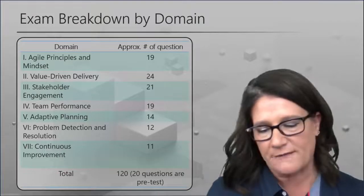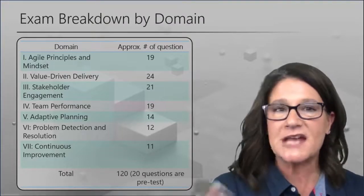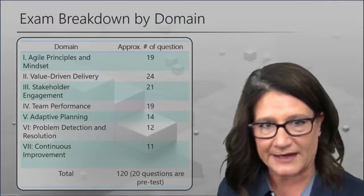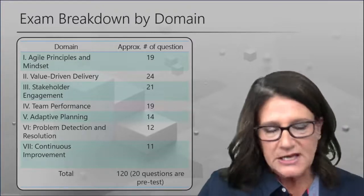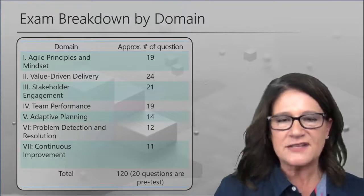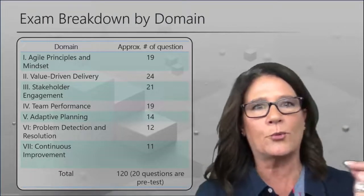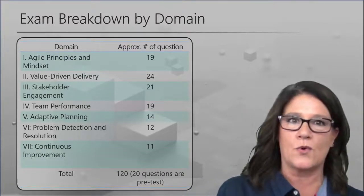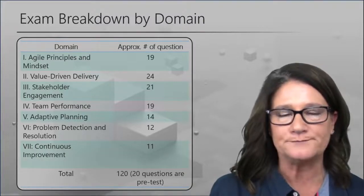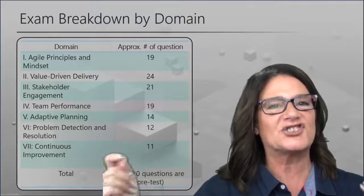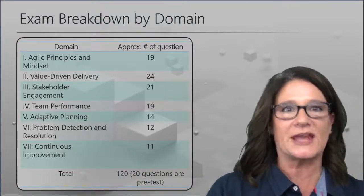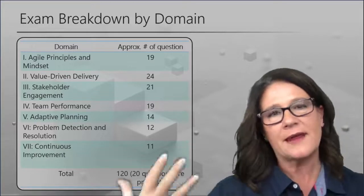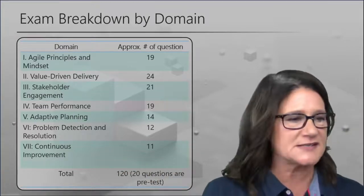Where did the ACP come from? PMI sends out every three years what are called role delineation studies — big surveys to project managers globally to find out what best practices they're actually using. They started to see more people reporting daily standups and task boards — more Agile practices. They went, 'Whoa, it's not just about predictive anymore.' That ship hasn't sailed, but it's changed direction. So PMI's first step into Agile was the Agile Certified Practitioner exam.